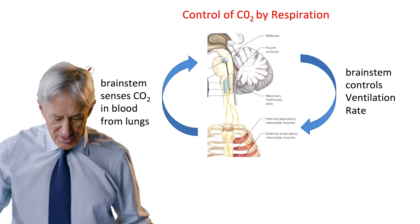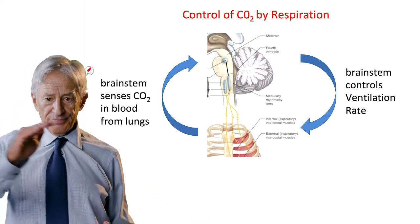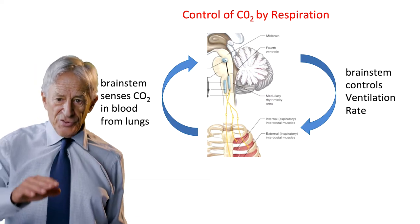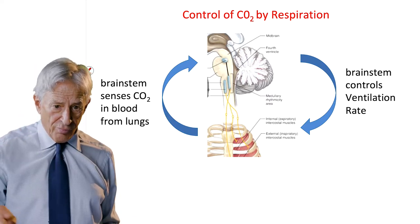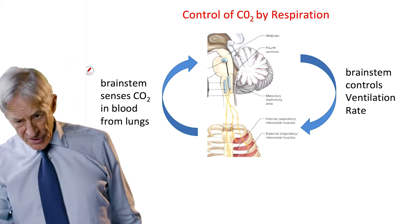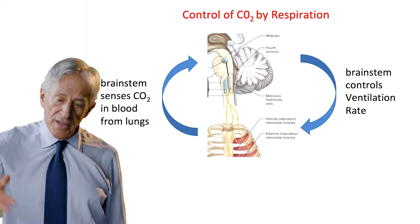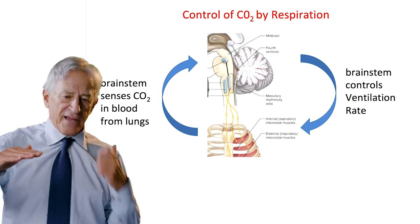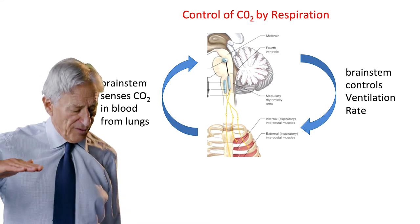So here is our negative feedback loop. CO2 goes up, brainstem senses that, sends instructions to increase the ventilation rate, and CO2 is brought back to normal level.